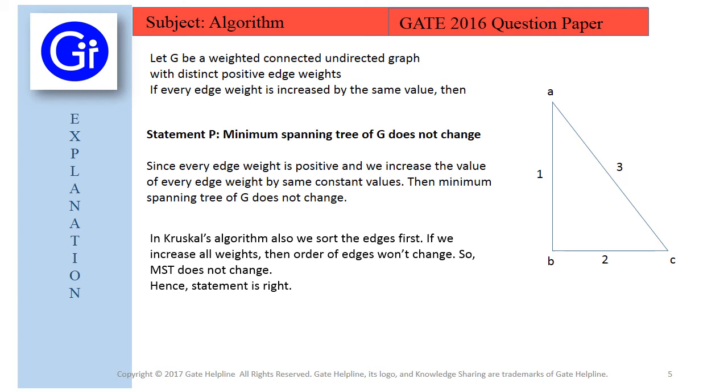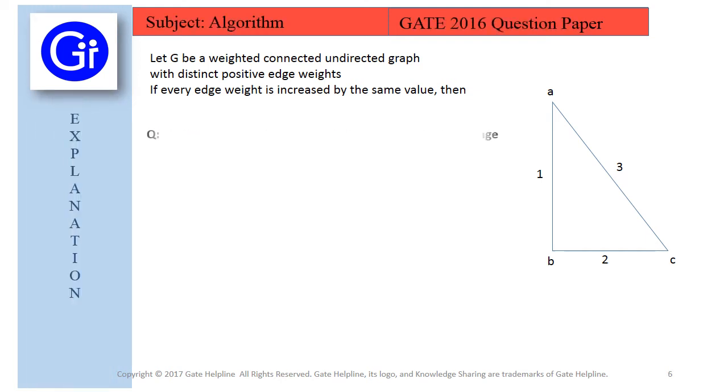So MST does not change. Hence statement P is right. Now we will see statement Q, shortest path between any pair of vertices does not change. So what is shortest path, or first of all we will see what is path.